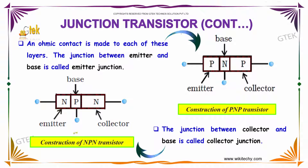You can see the construction of an NPN transistor, which has N-P-N regions: N is the emitter, P is the base, and N is the collector. In a PNP transistor, P is the emitter, N is the base, and P is the collector.